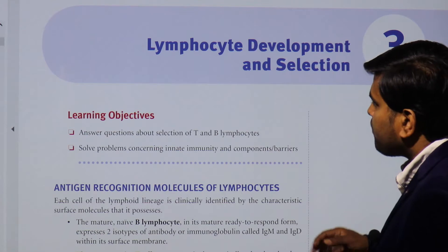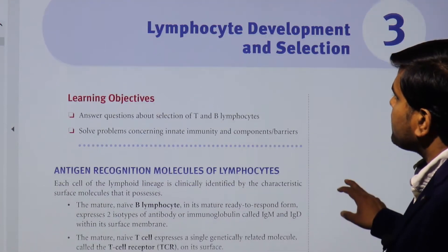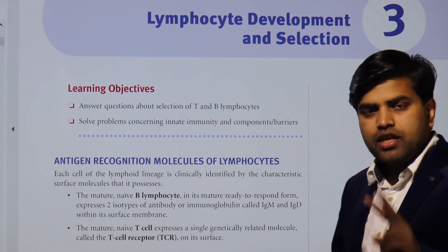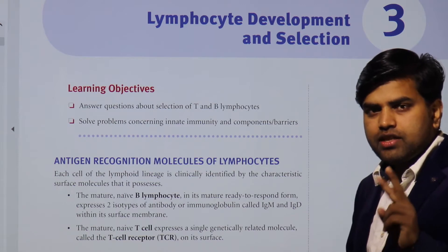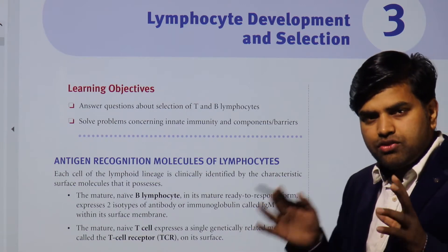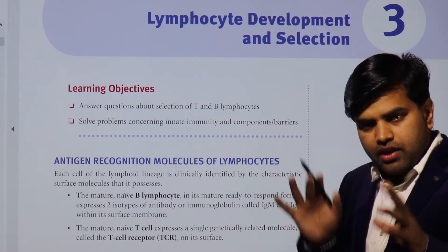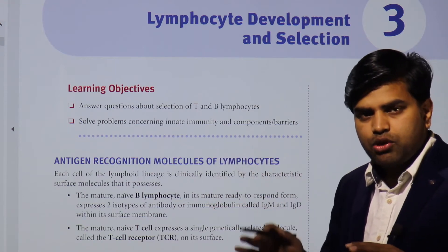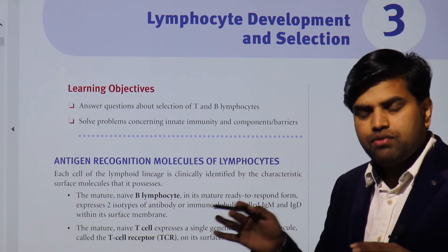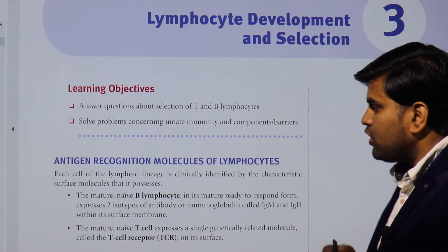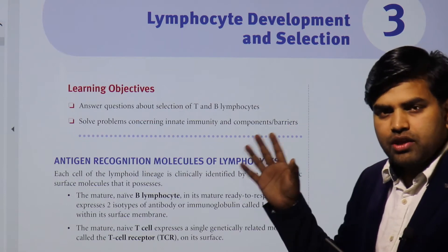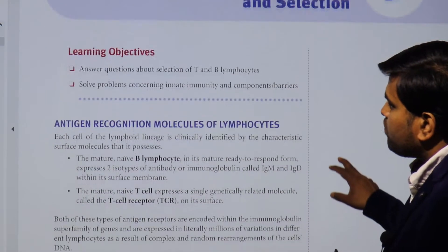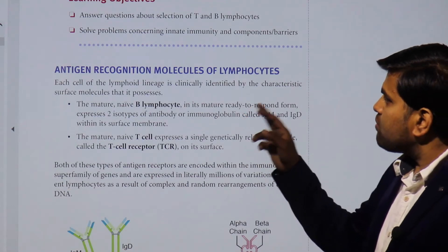Moving forward, we need to understand lymphocyte development and selection. There are two lymphocytes: B cells and T cells. Although natural killer cells come from the lymphoid progenitor cell, they fall under innate immunity — responsible for tumor and virus-infected cells — so we will focus on B cells and T cells.